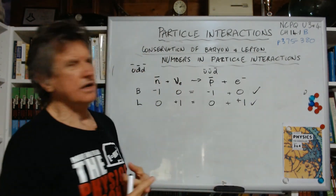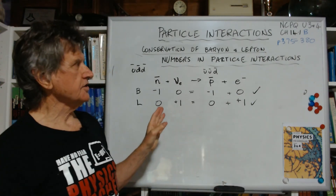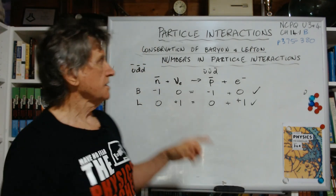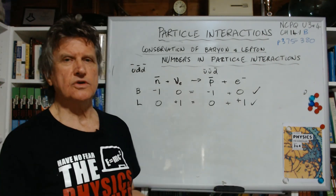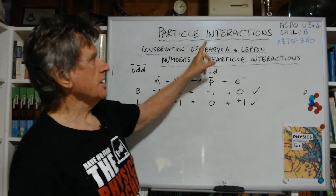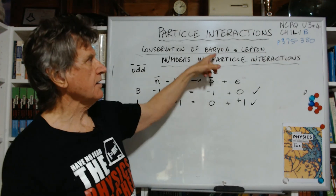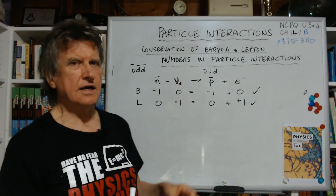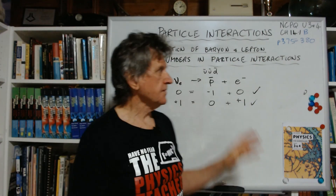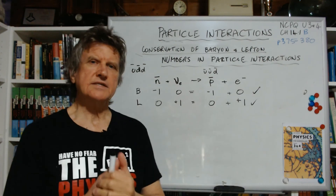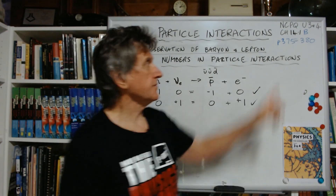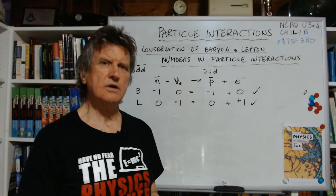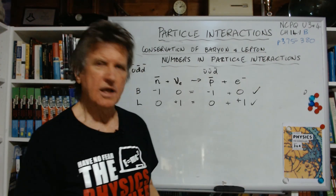That's about all there is to that. Really, all you're trying to identify are the two conservation laws. In the marking for the external exam, they might ask you to state two conservation laws for particle interactions — you'd put baryon and lepton numbers. If you put baryon number and charge, you'd probably get the marks, but it's risky because we're concentrating on baryon and lepton numbers. The next thing I'll look at will be Feynman diagrams in 14.2, which is a big chunk of the course, and then symmetry afterwards.